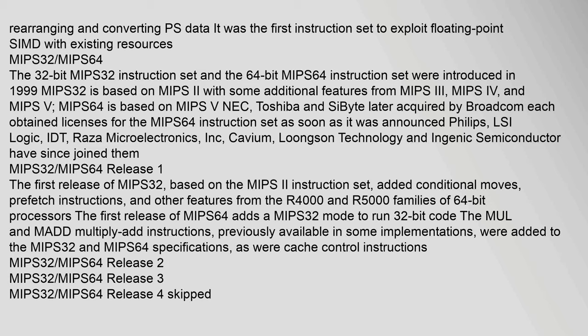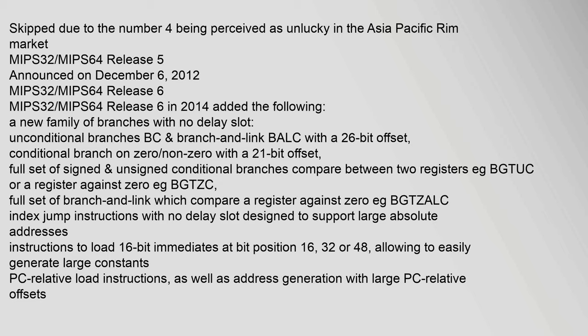The first release of MIPS-32, based on the MIPS-II instruction set, added conditional moves, prefetch instructions, and other features from the R4000 and R5000 families of 64-bit processors. The first release of MIPS-64 adds MIPS-32 mode to run 32-bit code. The MUL and MAD multiply-add instructions were added to the MIPS-32 and MIPS-64 specifications, as were cache control instructions. MIPS-32/MIPS-64 release 4 was skipped due to the number 4 being perceived as unlucky in the Asia-Pacific rim market.